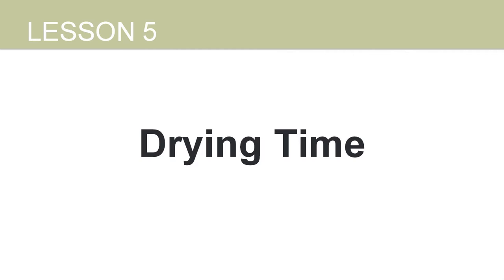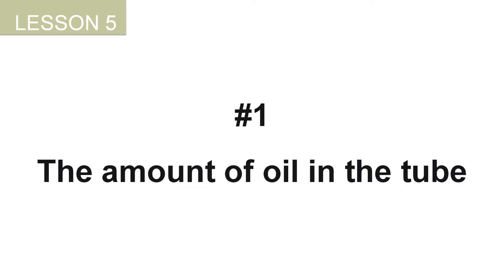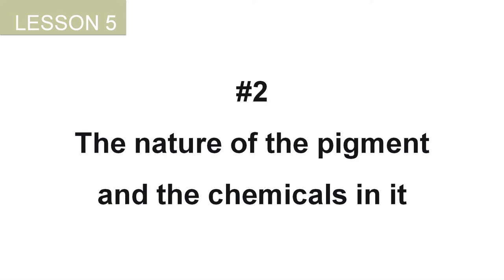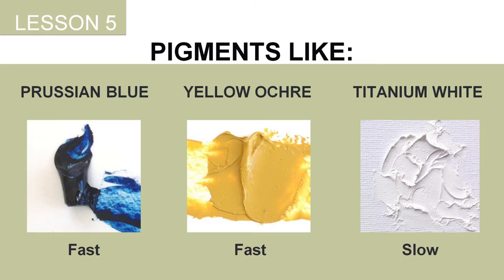Paints have different drying times, usually determined by five factors. The first is the amount of oil in the tube — the more oily the paint, the slower it dries. Some oil paint brands will be more oily than others, so those pigments will take longer to dry. The second factor is the nature of the pigment: Prussian blue and earth colors such as ambers and ochres tend to dry fast, while titanium white dries much slower.